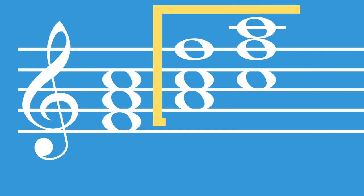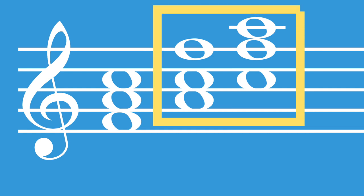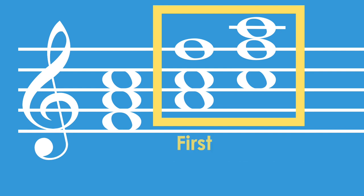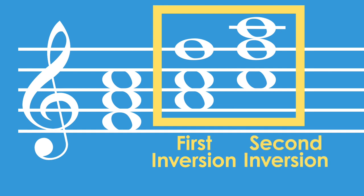When a triad's lowest note is not the root, it's called an inversion. When the third is in the bass, it's called first inversion. When the fifth is in the bass, it's called second inversion. If the root is in the bass, it's called root position.